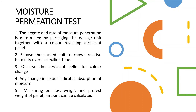The moisture permeation test is a specific test used for evaluating soft gelatin capsules. The gelatin shells are susceptible to absorbing moisture from the encapsulated mass, which can make them porous or soft. Conversely, under low external humidity conditions, they can lose moisture and become very hard. Therefore, soft gelatin capsules must be maintained at specific temperature and humidity conditions. The moisture permeation test assesses the integrity and ability of the gelatin shells to absorb moisture.